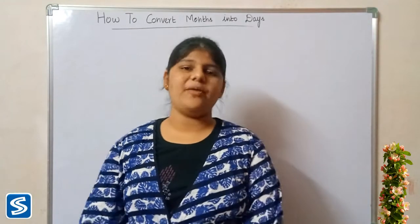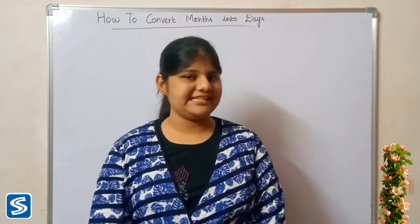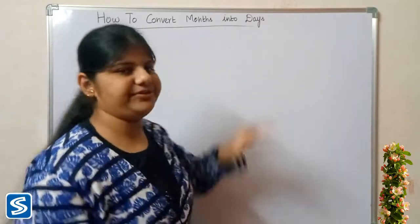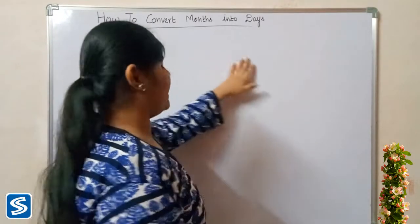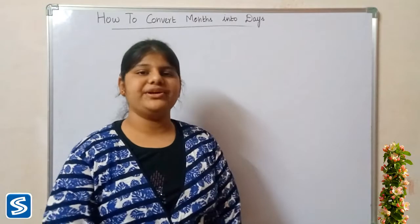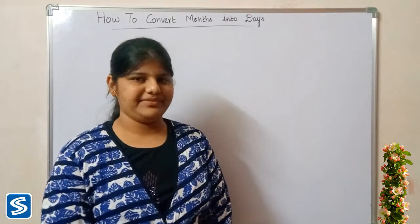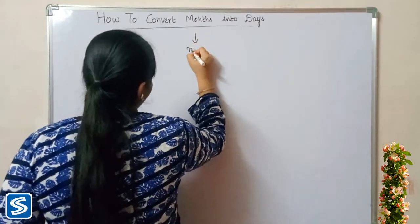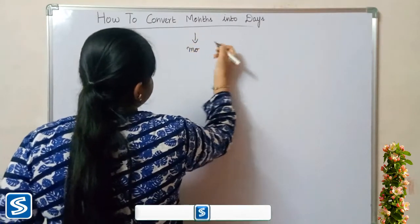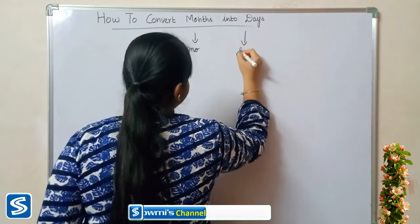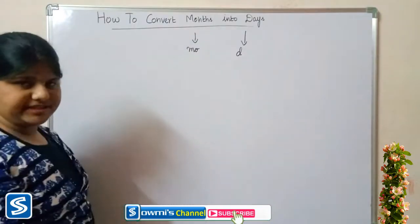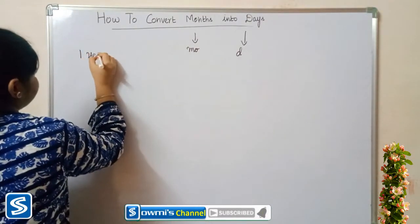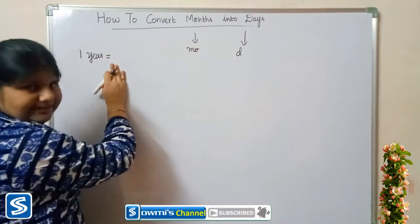Hi friends, welcome to Samish's channel. In this video we are going to see how to convert months into days. Months and days are the units of measurement of time. The short form of months is 'mo' and the short form of days is 'd'. We already know that one year is equal to 12 months.